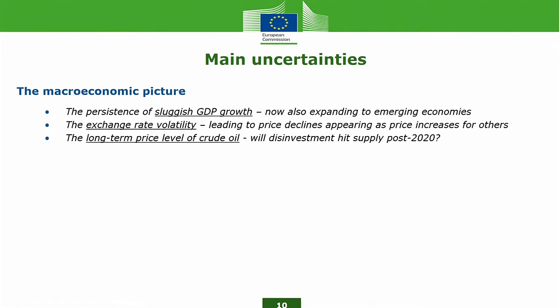Some of the main uncertainties on the macroeconomic picture: there is a persistence of sluggish GDP growth, which is now expanding to emerging economies. What is interesting is that if you look at IMF forecasts going five years into the future — or World Bank forecasts — every time we try to see what will happen in the next four or five years and then compare three to six months later, things turn out to be lower than expected. So there is more potential that is not exploited, and that has an impact on the demand for many commodities including food. The exchange rate is also a major uncertainty — in Europe we tend to focus on the euro-dollar rate.